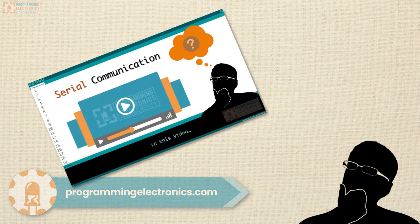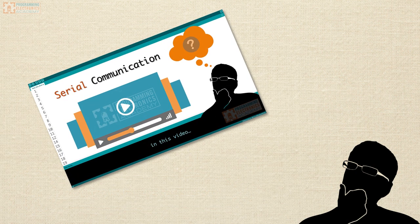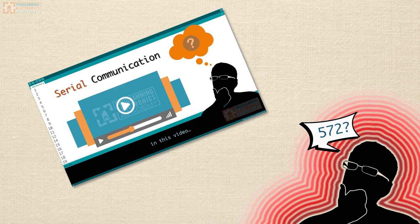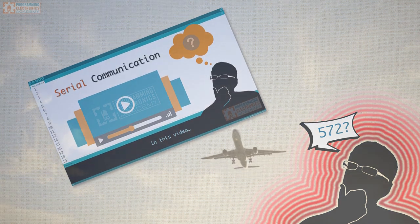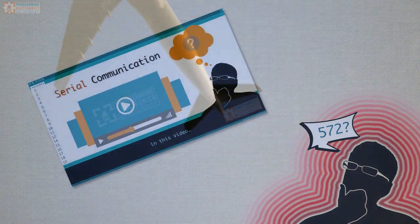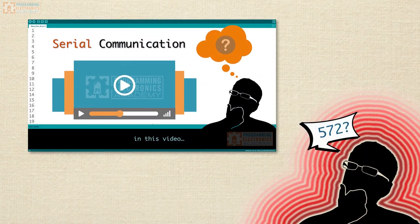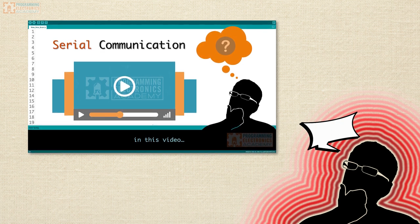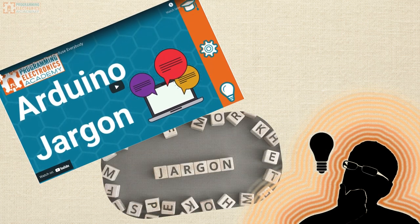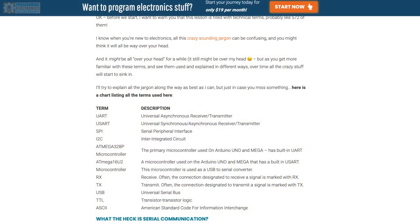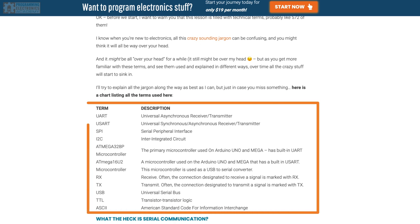Before we start, I want to warn you that this lesson is going to be filled with tons of technical terms — probably like 572 of them or something. When you're new to electronics, all this crazy-sounding jargon can be pretty confusing, and you might think it's going to be over your head. But as you get more familiar with these terms and see them used and explained in different ways, over time it all starts to sink in. I'll do my best to explain the jargon along the way, and you can also find a chart of all the terms and a written description in the link below.